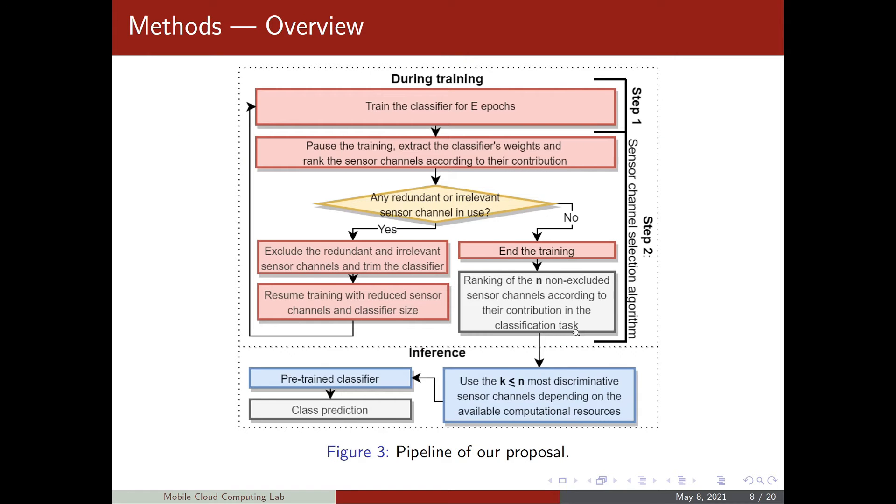Let's move on to the methods now. We start by training a classifier for a certain number of epochs. We pause the training. We extract the classifier's weights. And with an algorithm, we rank the sensor channels according to their contribution to their classification performance. Also with an algorithm, we find out if there are any redundant or irrelevant sensor channels in use. If there are, we exclude them and we train the classifier. The training then resumes with a reduced number of sensor channels and reduced classifier size.